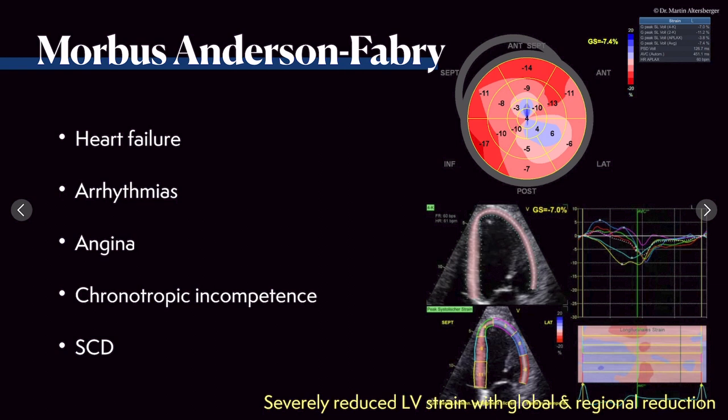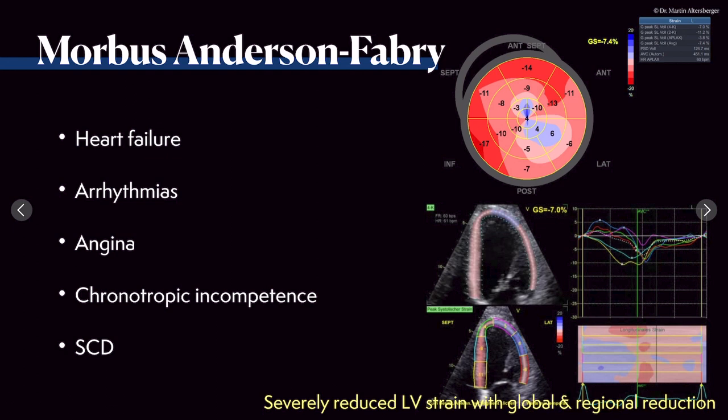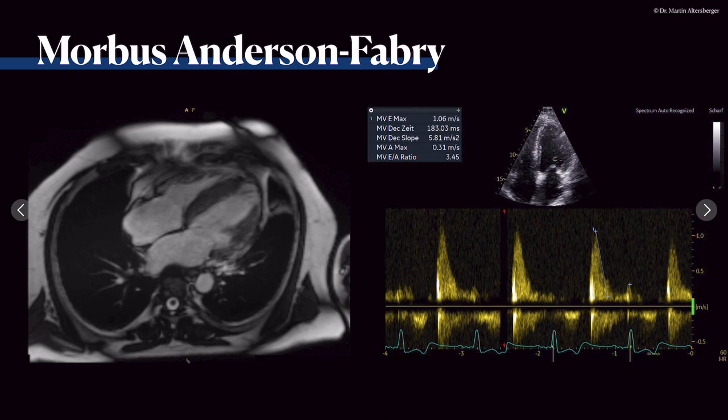These patients are at risk and can have specific therapy — enzyme replacement therapy — but of course we have to perform genetic testing. Here the bullseye display shows quite nicely the basal segments and the reduction in strain in the apical segments, especially in the lateral and inferolateral region where we also visualized possible scarring of the left heart.